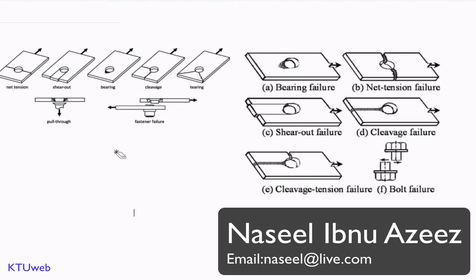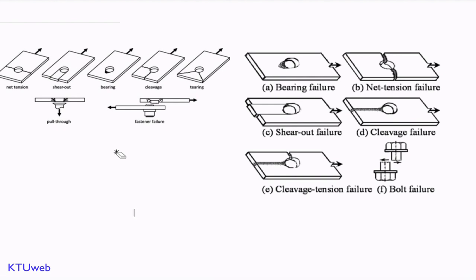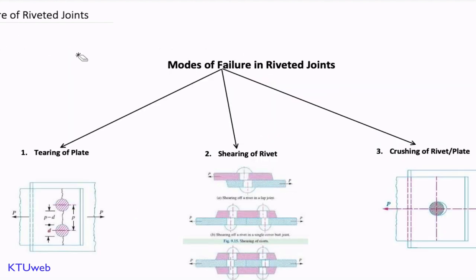Hi everyone, welcome to KTUWeb. In this video we are going to discuss the different failure modes that commonly occur with riveted joints. Before designing a riveted joint, one should be aware of the possible ways that failure may occur. We can classify failures of rivets into three major categories.